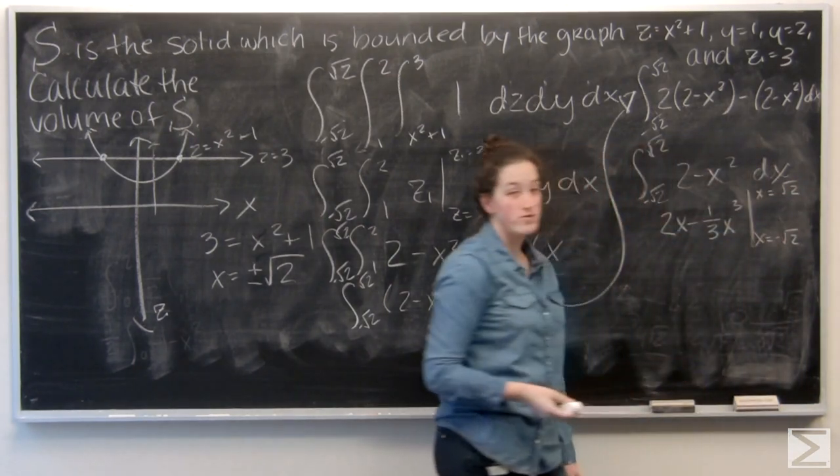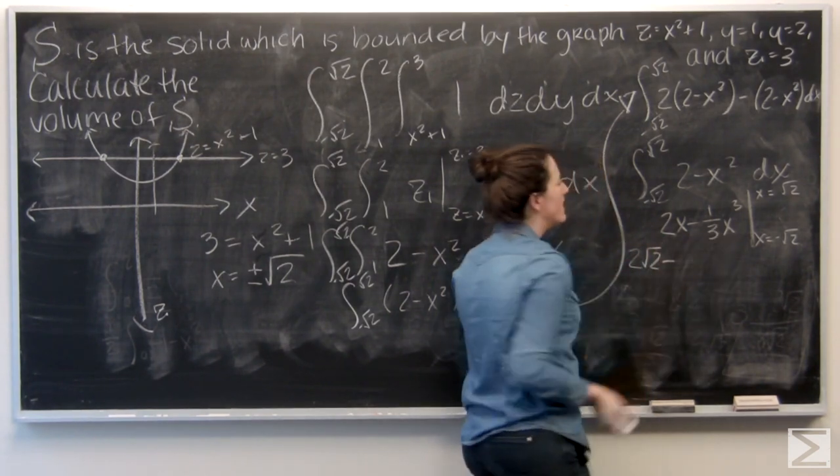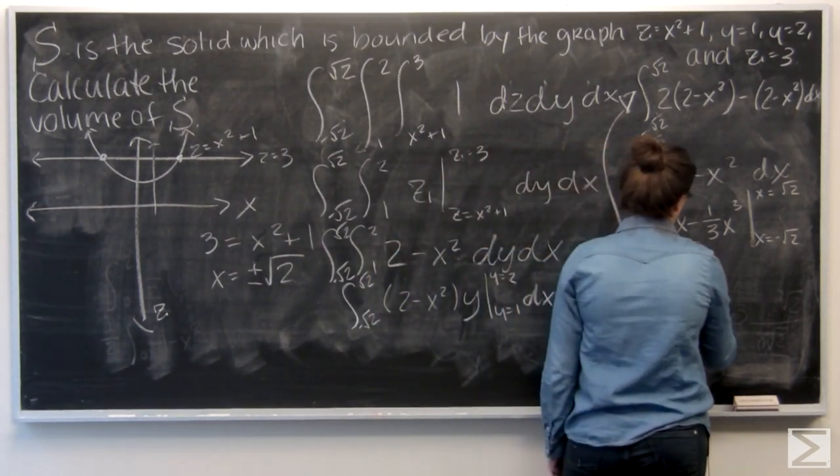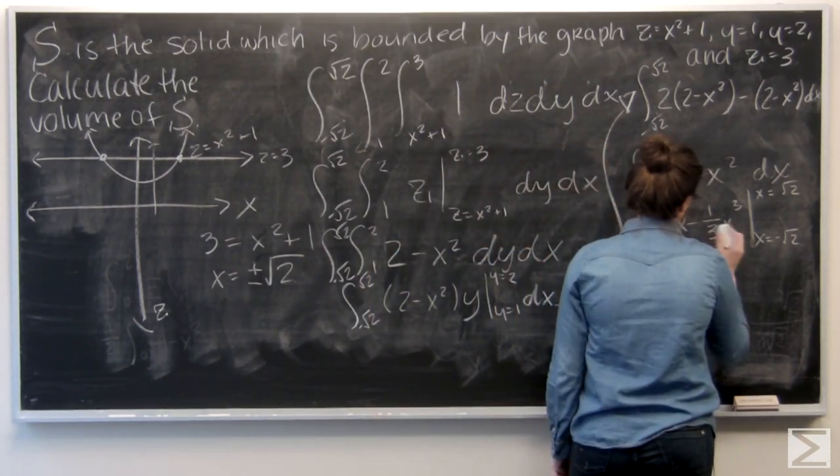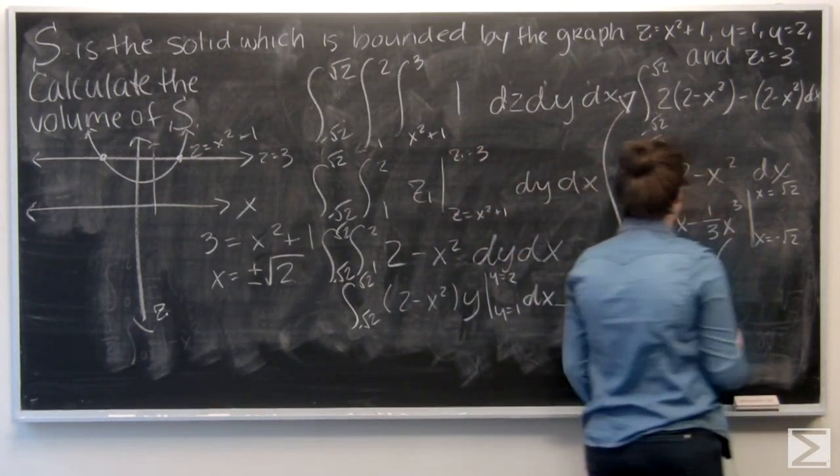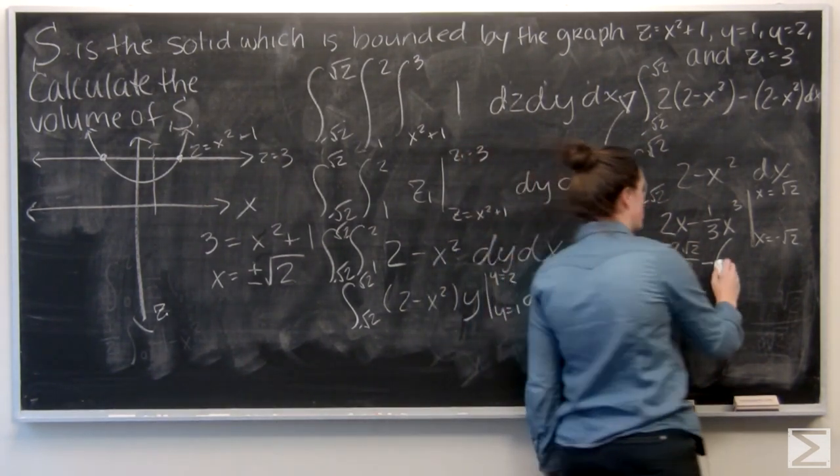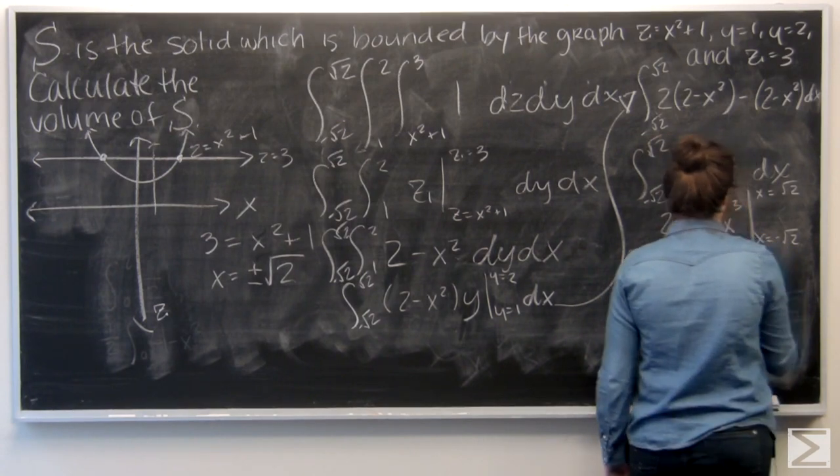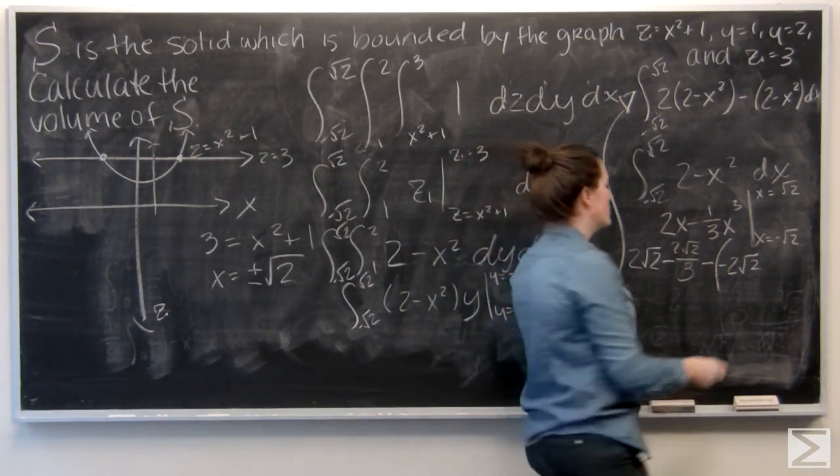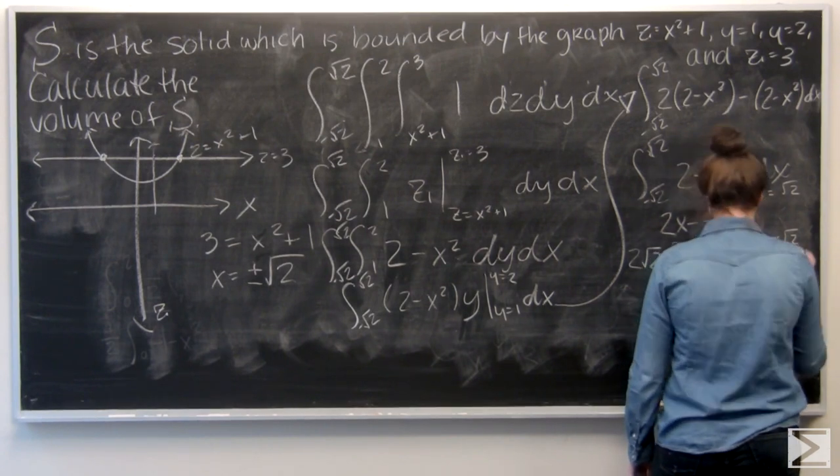So let me go ahead and plug in root 2. So 2 root 2 minus, and root 2 to the third is going to be 2 square root of 2. So 2 times negative root 2 is negative 2 square root of 2. And negative root 2 to the third is negative 2 square root of 2. So plus.